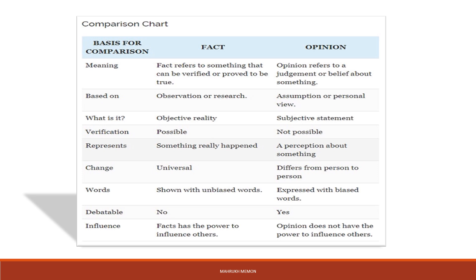In scientific inquiry we don't just claim something — if we claim it we have to justify it with other facts. But in social sciences everyone has their own opinion and we can debate over the topic. Facts have the power to influence others because they are true or based on justification, while opinions do not have that same power to influence because they may vary from person to person.